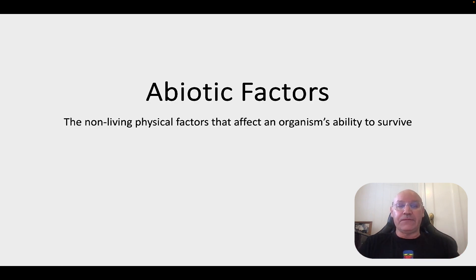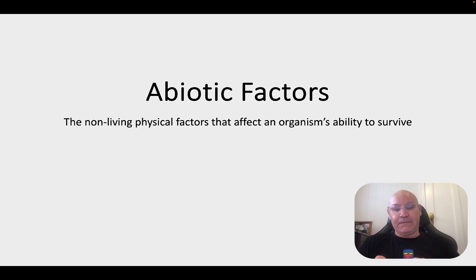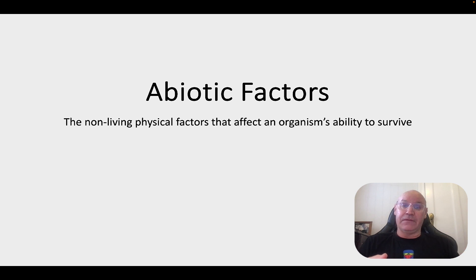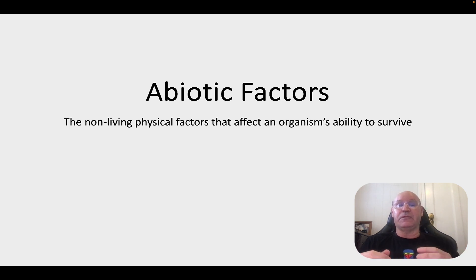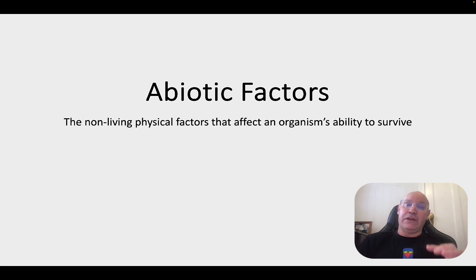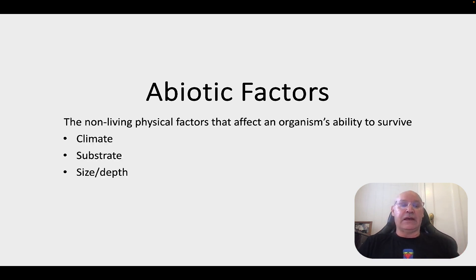Abiotic factors are the non-living physical factors in an ecosystem that influence what organisms are able to live there. The distribution and abundance of species is influenced by abiotic factors, so we can compare ecosystems by comparing them. Specifically, the syllabus asks us to consider abiotic factors in terms of climate, substrate, and also size and depth.